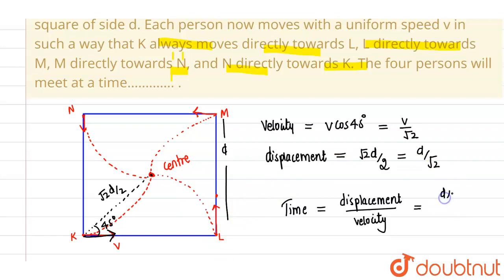So this will be given by displacement is d by root 2 and velocity is v by root 2, so this will ultimately give us d by v. So this is the time, this is our final answer. I hope you understood, thank you.